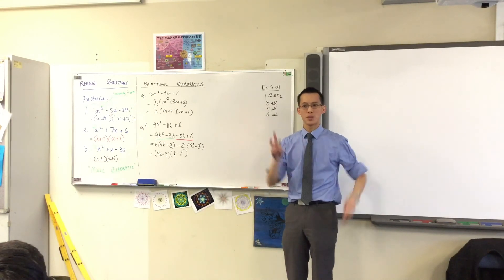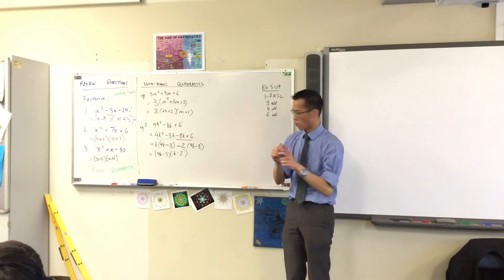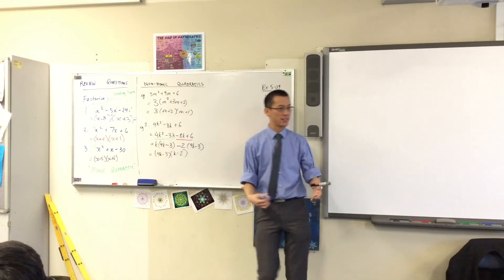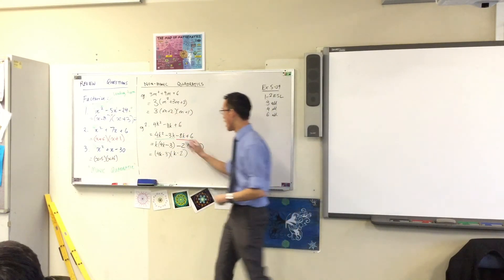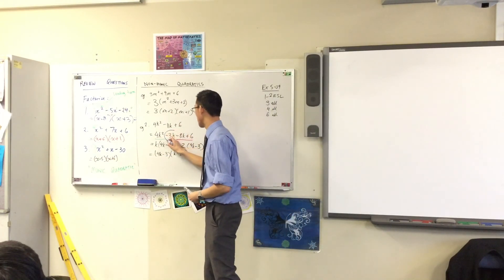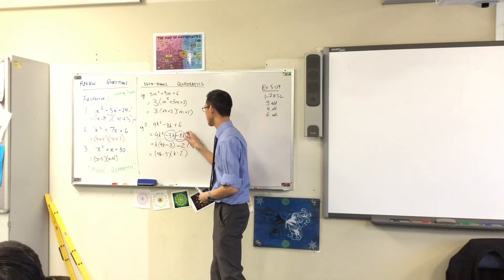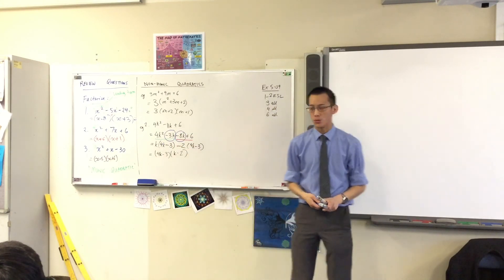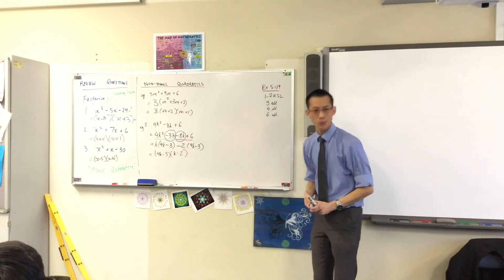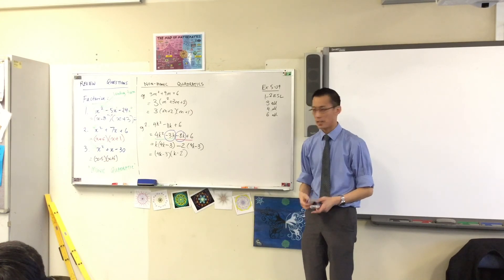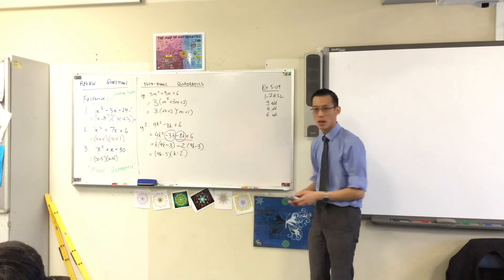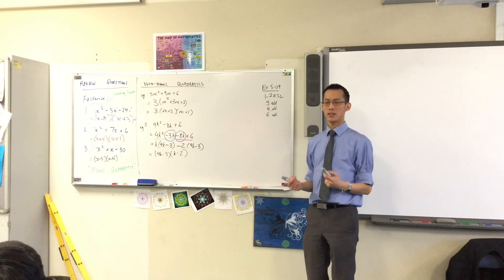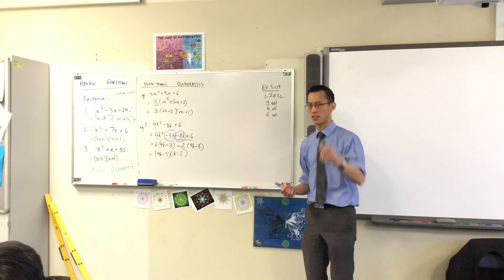The part that might seem mysterious is that I chose to break apart the minus 11k in a very particular way — into negative 3 and negative 8. Look at the very first line. Look at the numbers. Where do you see the connection?